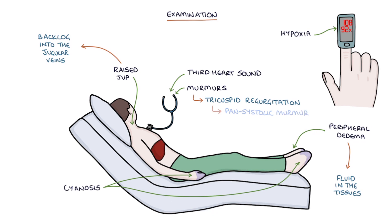You might also find hepatomegaly — an enlarged liver — due to back pressure into the hepatic vein. When tricuspid regurgitation is present, blood flowing backwards through the tricuspid valve can lead to a pulsatile liver, or pulsatile hepatomegaly.